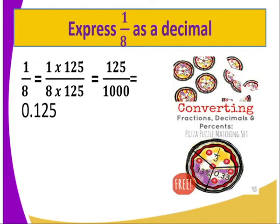You are also required to express 1 over 8 as a decimal. As I said, you identify a common factor — in our case we have taken 125. So you take 1 and multiply it by 125, and also 8 you multiply by 125. We get 125 over 1000, and when you divide 125 by 1000, we get 0.125. So 1 over 8 as a decimal is 0.125.